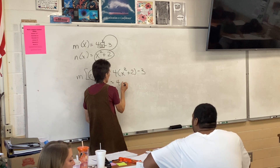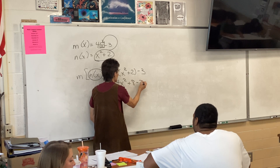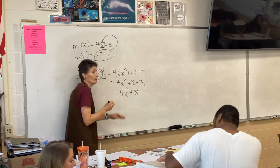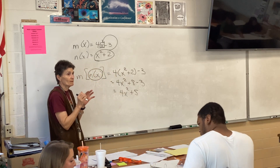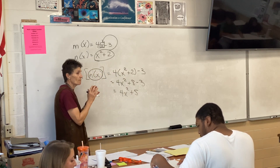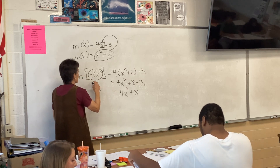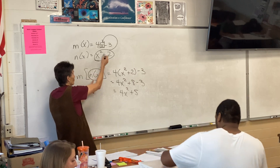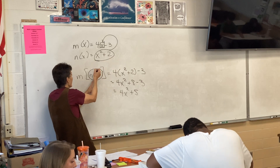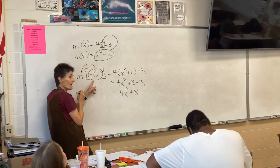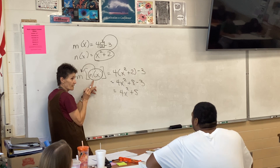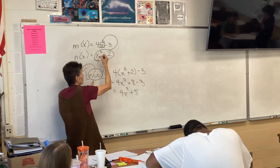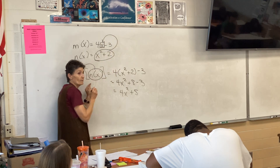So I've got 4x² + 8 - 3, which gives 4x² + 5. Now it looks confusing, but if you think about it one step at a time: take n — what n is — and plug it into m for all the x's. There's the x in m, so this is going to get plugged in there.